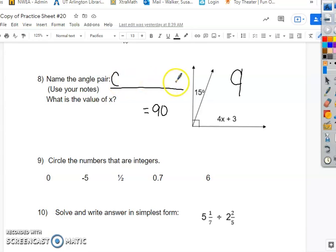Write that word, complementary. And then set up your equation, 4x plus 3 plus 15. Put that right here so you can solve for the value of x.